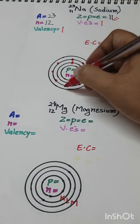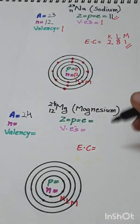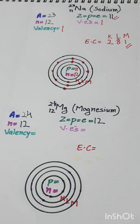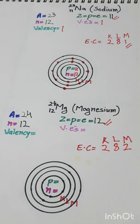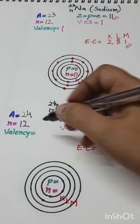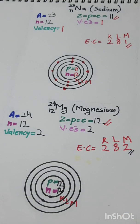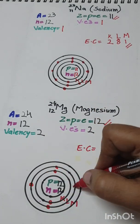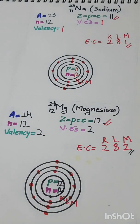Magnesium: A = 24, Z = 12, n = 24 − 12 = 12. Electronic configuration — K shell: 2, L shell: 8, leaving 2 electrons for the M shell. EC is 2, 8, 2. The outermost M shell has 2 valence electrons, so valency = 2. Number of protons = 12, number of neutrons = 12.